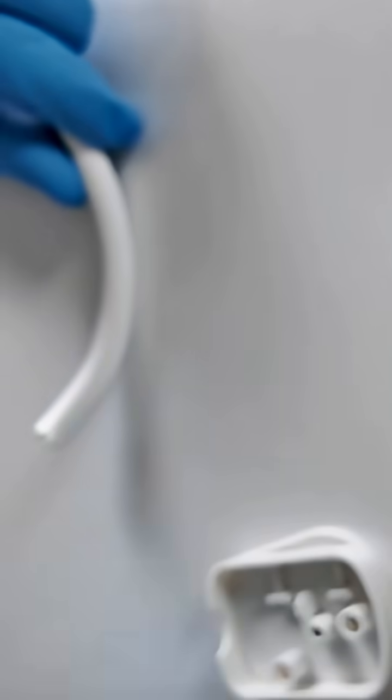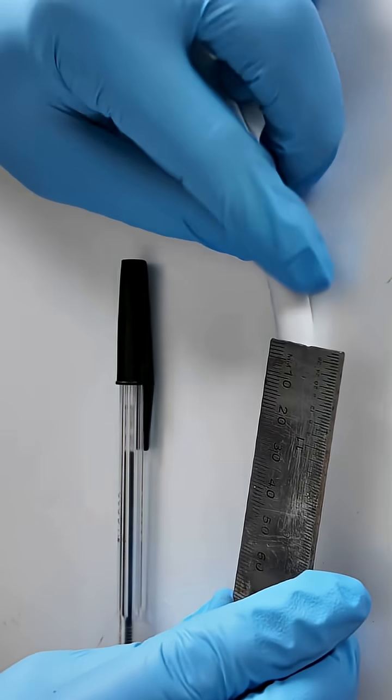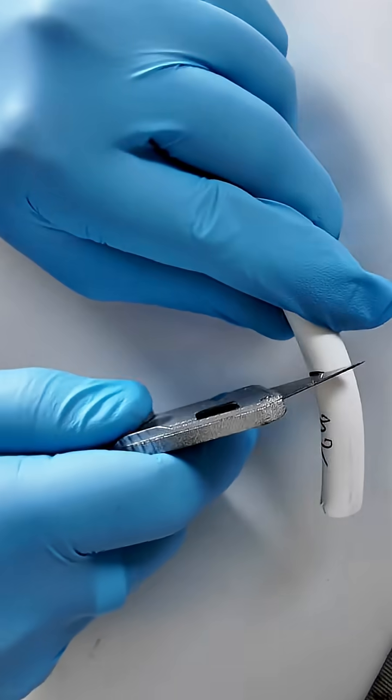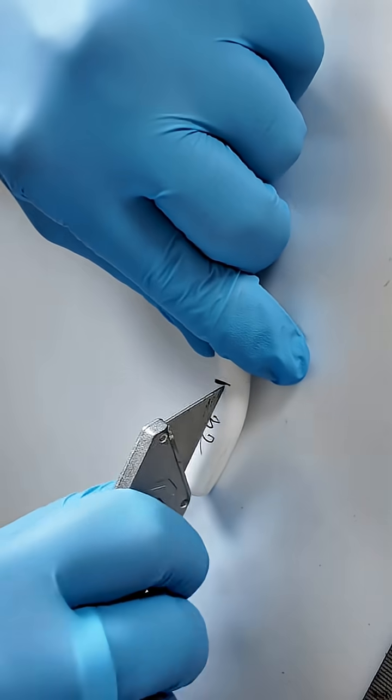You'll need a screwdriver, flathead or crosshead depending on the plug, wire cutters and strippers, and the appliance flex 3 core cable with brown, blue, and green-yellow wires.